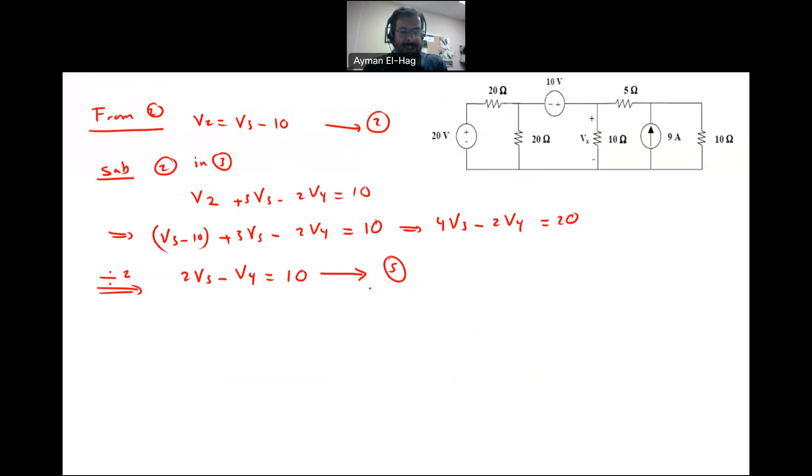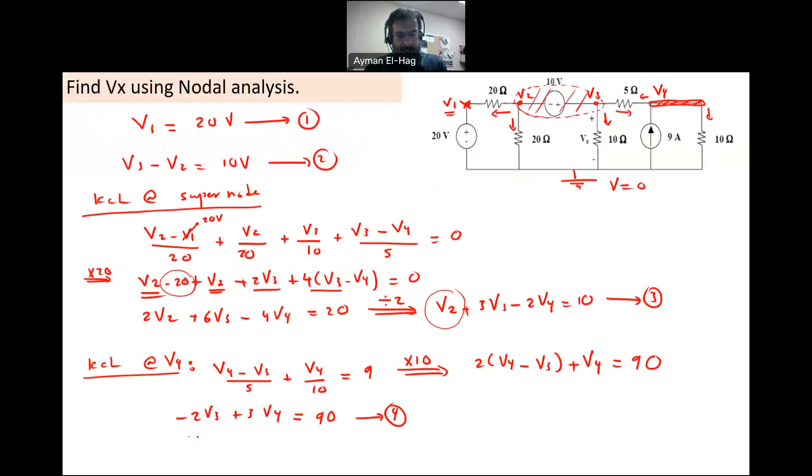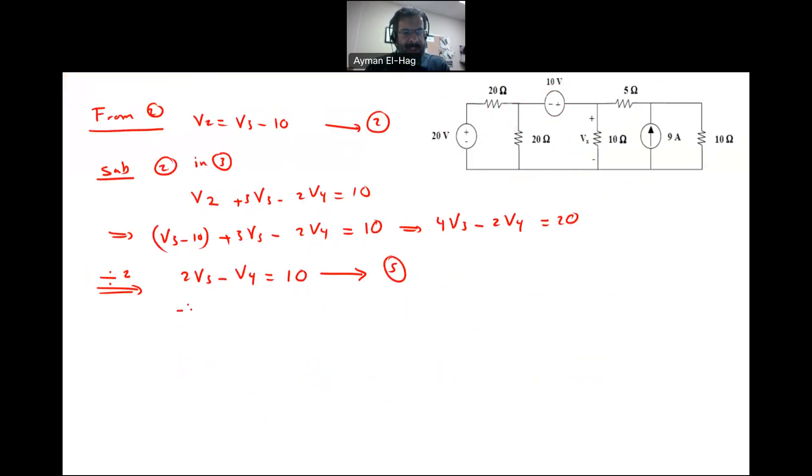Now let me write down my other equation here, equation number 4. So my equation number 4 is minus 2V3 plus 3V4 is equal to 90. Now you can see clearly here, if I add these two equations, so add, we'll add these two together, this will cancel. You will have 2V4 is equal to 100. So your V4 will equal to 100 divided by 2, which is equal to 50, 50 volts.